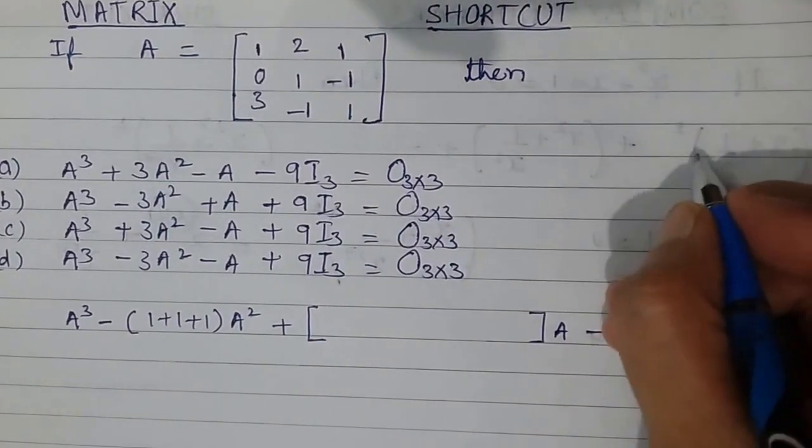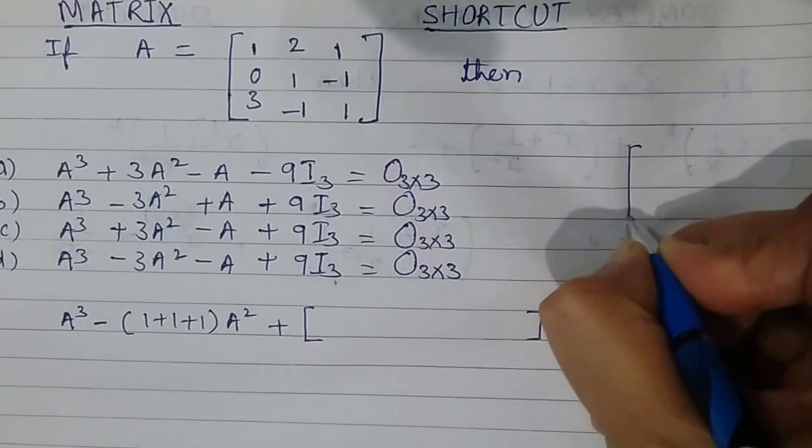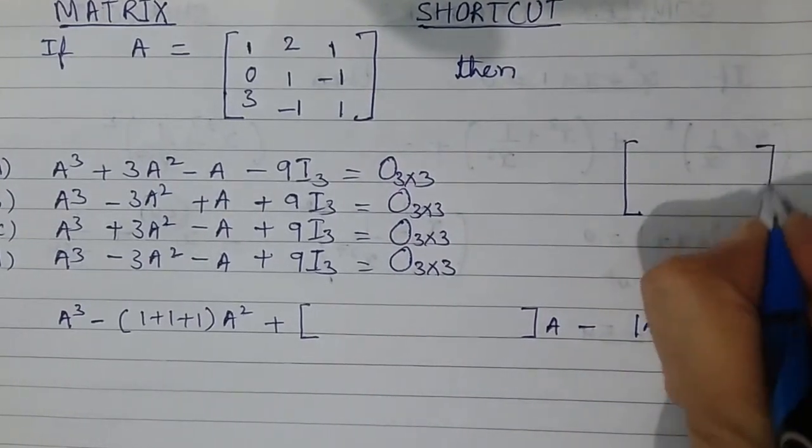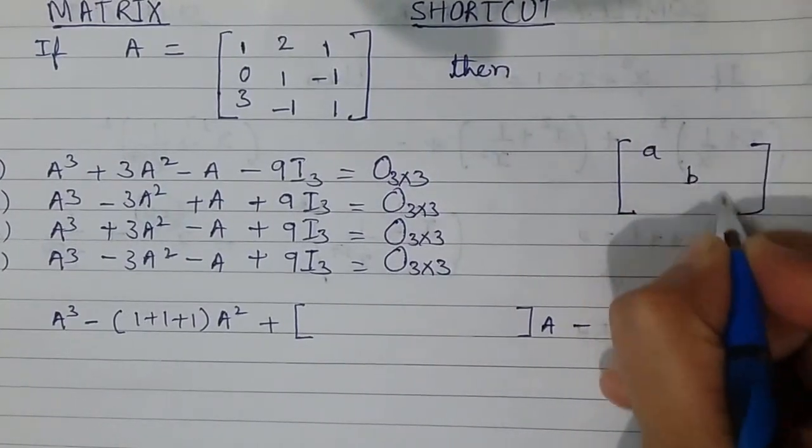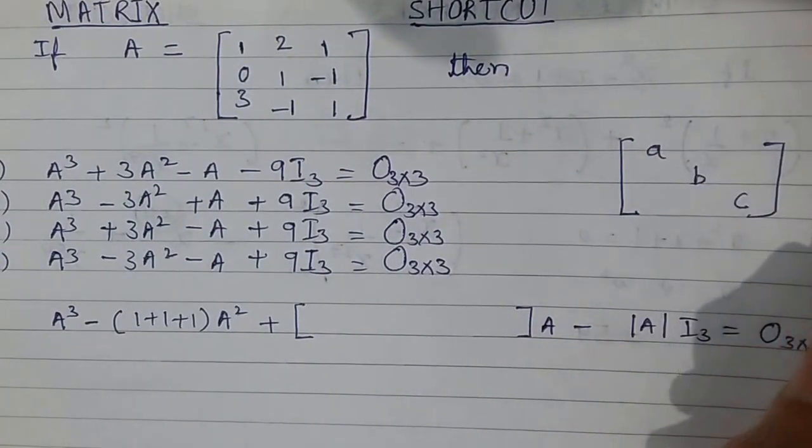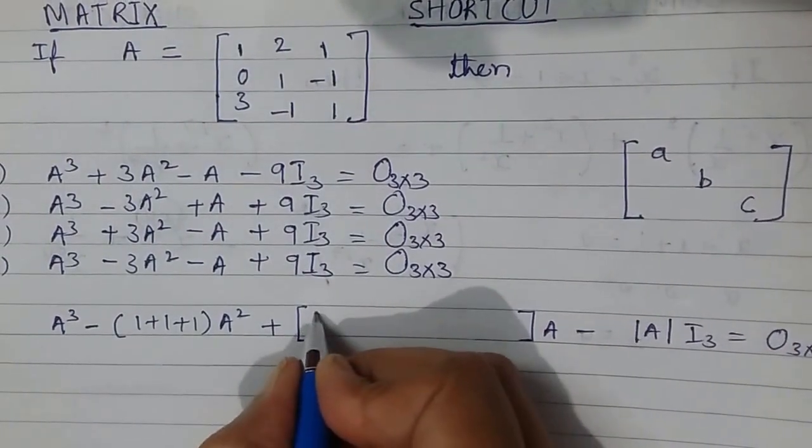What will come here I will explain to you. If I have a matrix something like this and if I have elements a, b, and c—these are the diagonal elements—so here I will be writing...